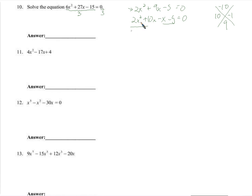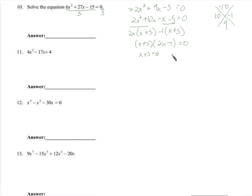We group: these two have a 2x in common, giving 2x times x plus 5. And these have a negative 1 in common, leaving x plus 5. They both have a factor of x plus 5, so we're left with 2x minus 1 times x plus 5 equals 0. Either x plus 5 equals 0 giving x equals negative 5, or 2x minus 1 equals 0 — add 1 to both sides, divide by 2 — giving x equals 1 half.